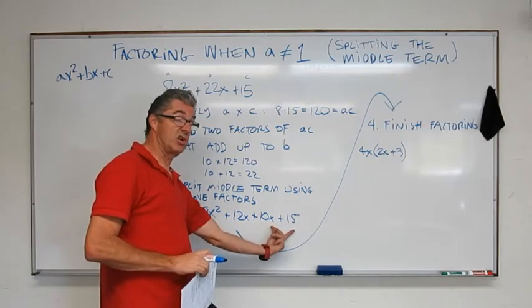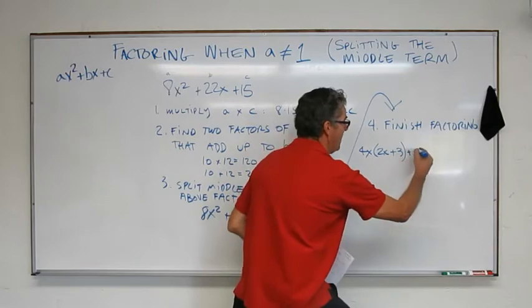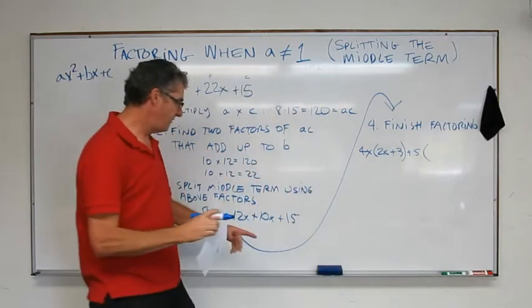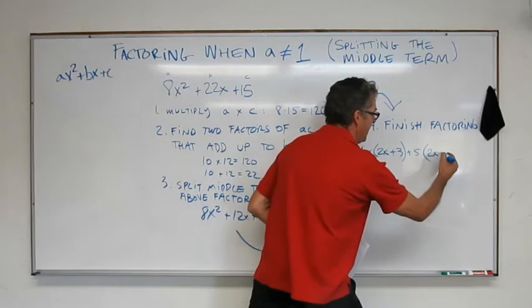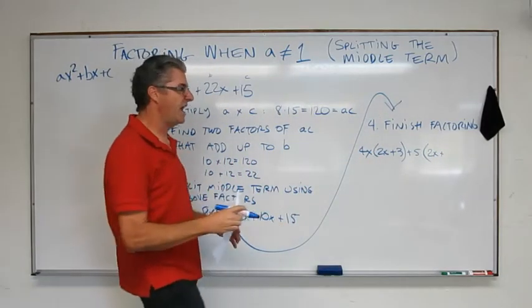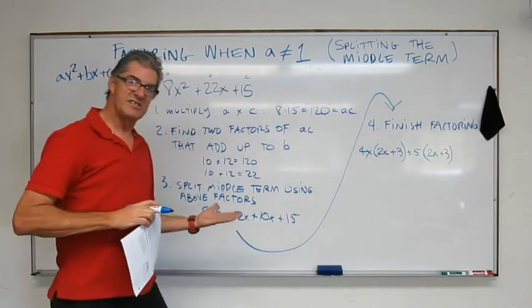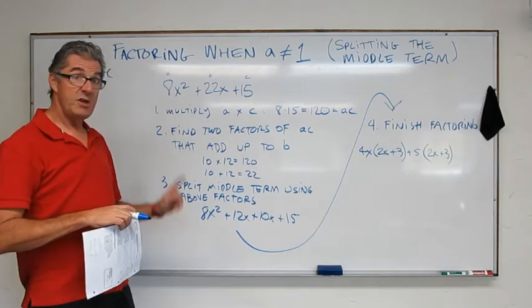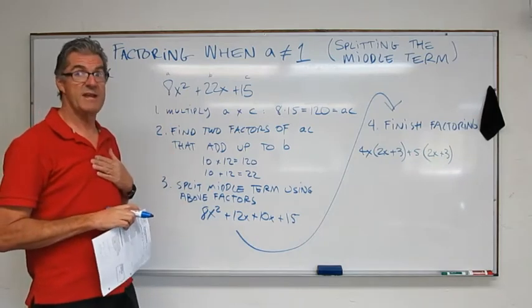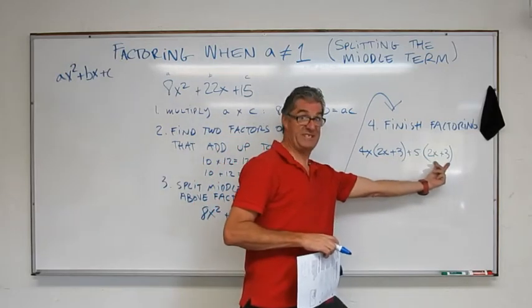Doing the same here, the GCF of these two terms is just 5. So we get plus 5 times, now if I factor a 5 out of 10x, I have 2x left. And if I factor a 5 out of 15, I have 3 left. Now, yeah, that is a little bit complex, but if you practice it, I'm sure you can get through to this. Now you have a nice little indicator that you're on the right path.